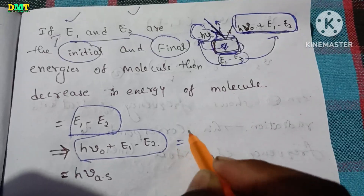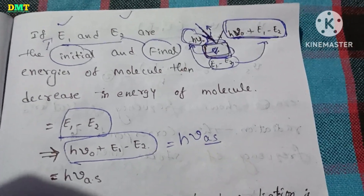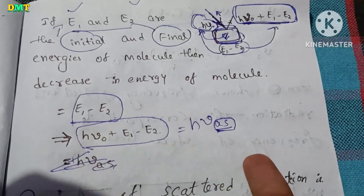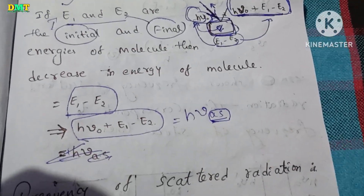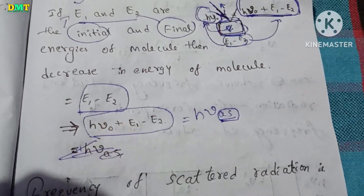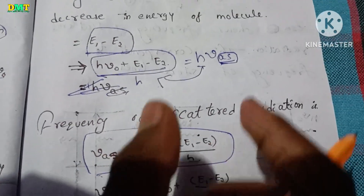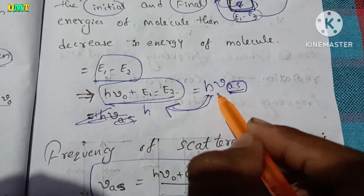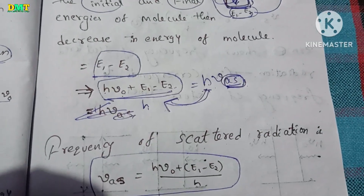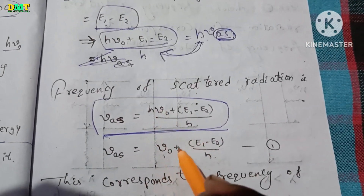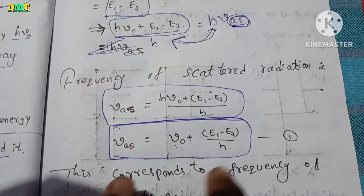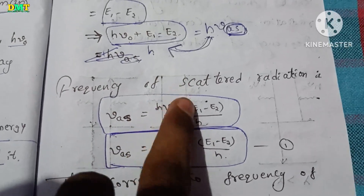This energy is equal to H·mu_as, where 'as' stands for anti-Stokes lines. So if we write H·mu₀ plus E1 minus E2 by H equals mu_as — after cancelling H — we get: mu_as equals mu₀ plus (E1 minus E2) divided by H. This is the anti-Stokes frequency equation.